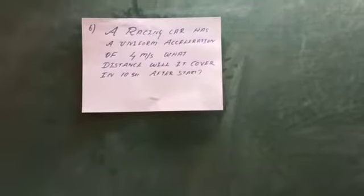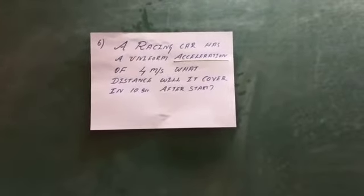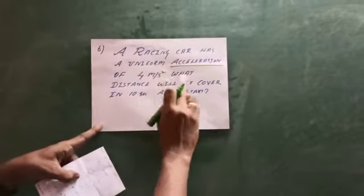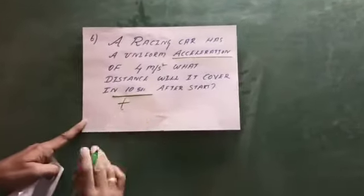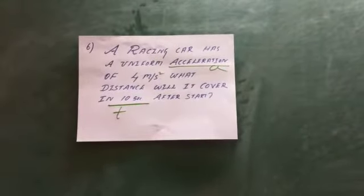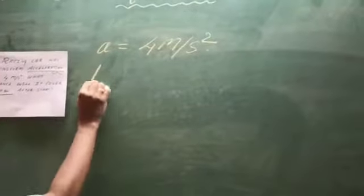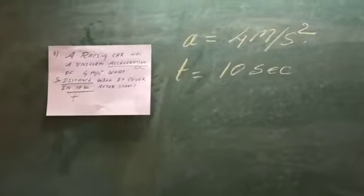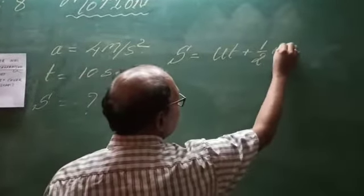Let us go to the sixth problem. A racing car has a uniform acceleration of 4 meters per second squared. What is the distance it covers in 10 seconds? So A is 4 meters per second squared and time is 10 seconds. We need to find distance S. The formula is S is equal to U times T plus half A times T squared.